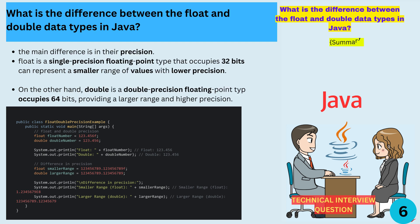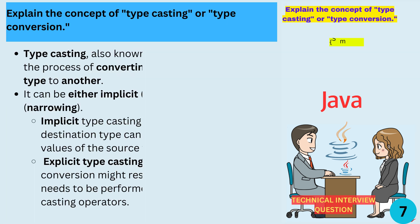What is the difference between the float and double data types in Java? The main difference is in their precision. Float is a single precision floating point type that occupies 32 bits and can represent a smaller range of values with lower precision. Double is a double precision floating point type that occupies 64 bits, providing a larger range and higher precision.